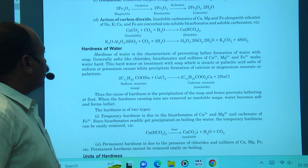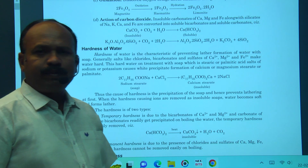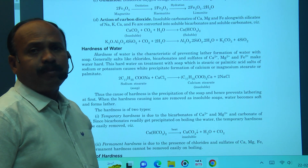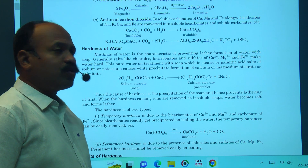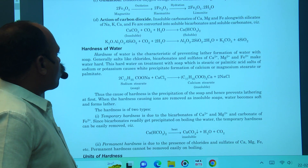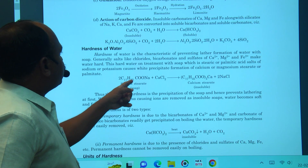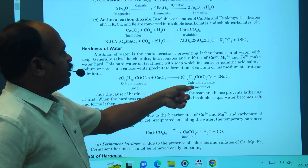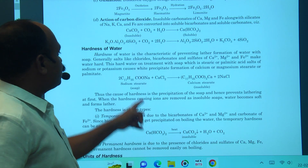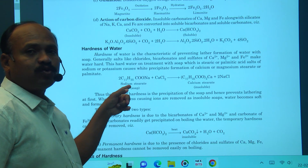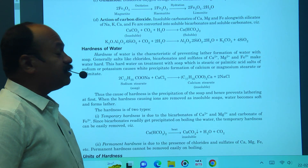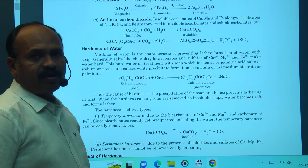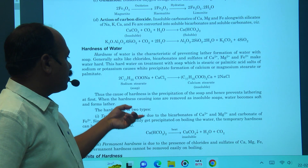Hardness of water is mainly due to bicarbonates, chlorides, and sulfates. Temporary hardness is caused by bicarbonates; permanent hardness is caused by calcium and magnesium chlorides and sulfates. Sodium stearate (soap) does not lather well in hard water — it forms insoluble calcium stearate precipitate instead, so good lather is not formed because of hard water.